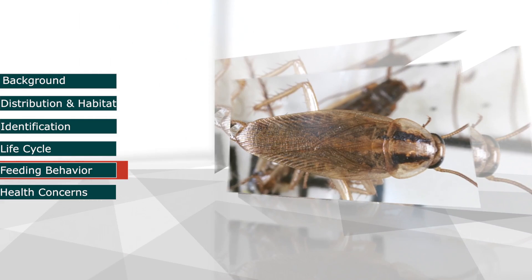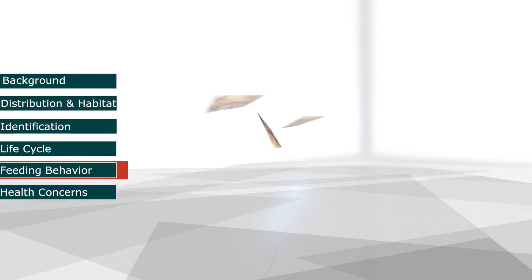The German cockroach is an omnivore and a scavenger. They are commonly attracted to starch, sugary foods, grease, and meat. They will become cannibalistic at times as well. German cockroaches are nocturnal, foraging at night and hiding in sheltered areas during the day.